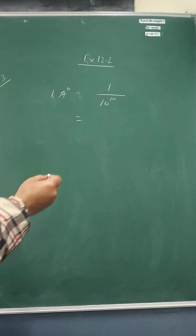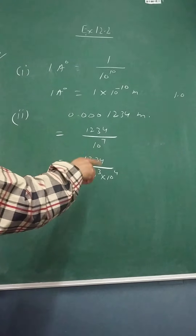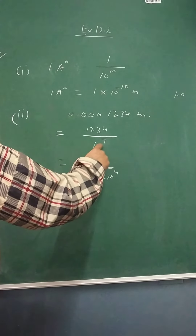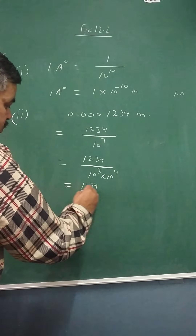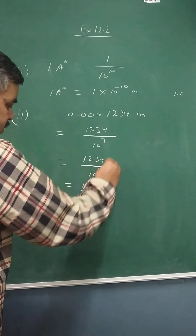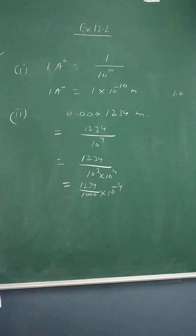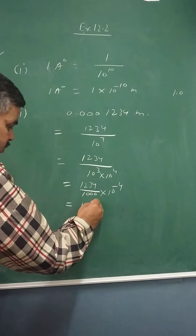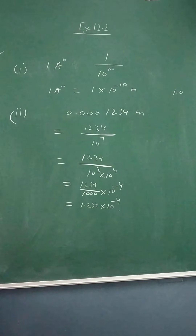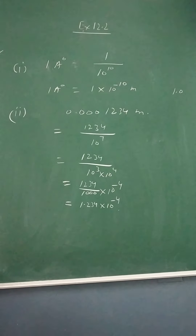You need to put the decimal so that 1 digit is left before it. There are 3 zeros before the significant digits, so out of 7, taking 3 zeros leaves 4. That gives 1234 upon 1000, and shifting to the numerator gives 10 to the power minus 4. Placing the decimal gives 1.234 × 10⁻⁴ meters.